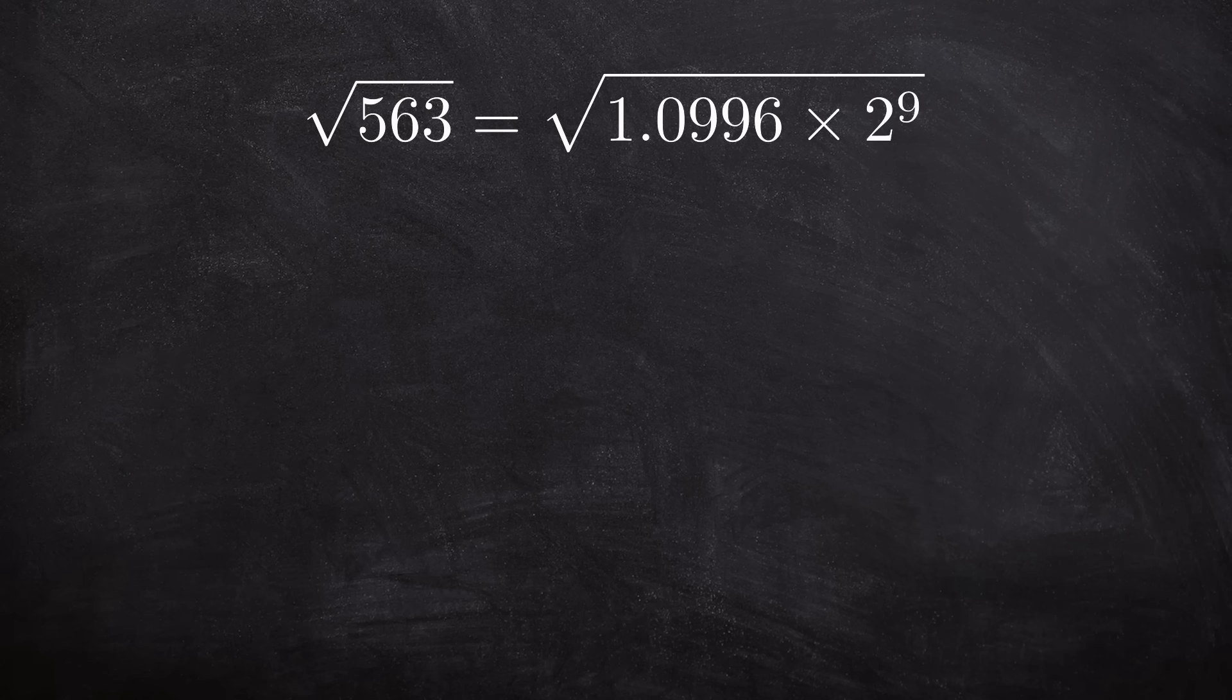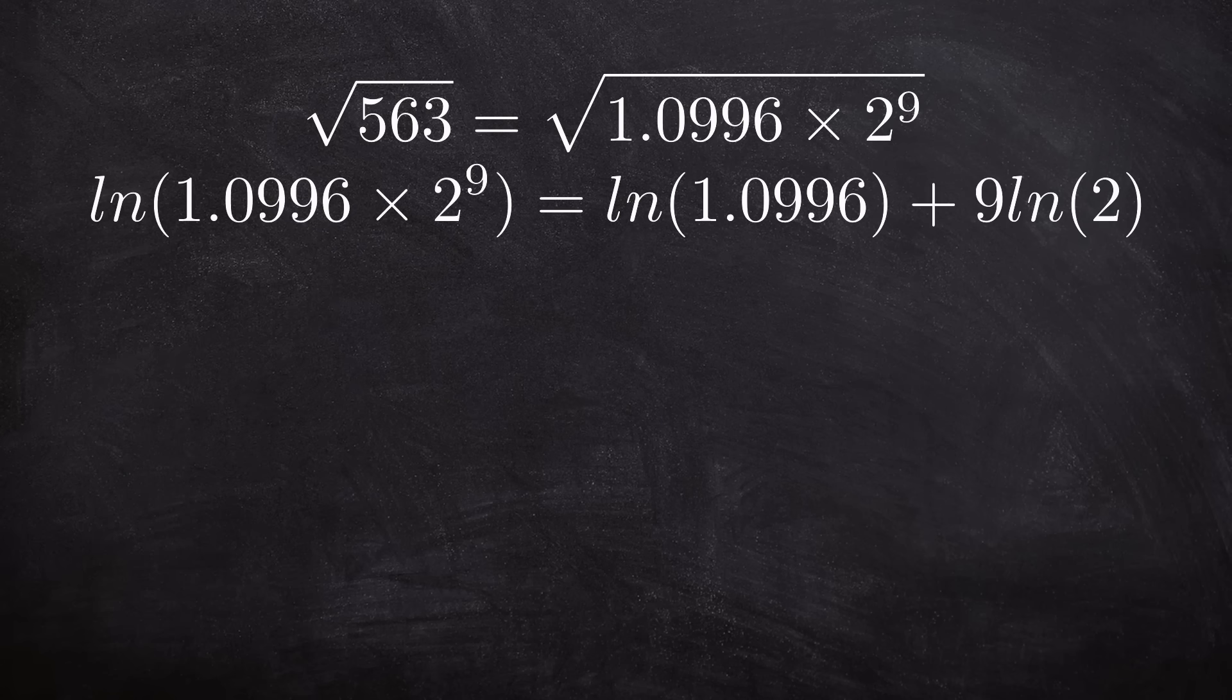So when you ask your calculator to find the square root of 563, the first step is it will convert it into standard form. 563 equals 1.0996 times 2 to the 9. The next thing it will do is it will try to find the natural log of this number. And it will do this by splitting it up using the logarithm laws into ln of 1.0996 plus 9 lots of the ln of 2. It has the ln of 2 stored in the memory so it will use that and then it will try to find the ln of 1.0996 using the Chebyshev polynomials.